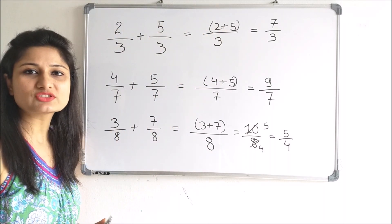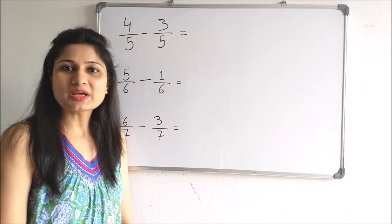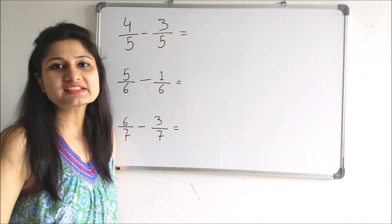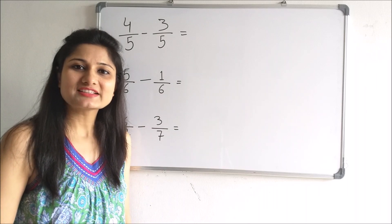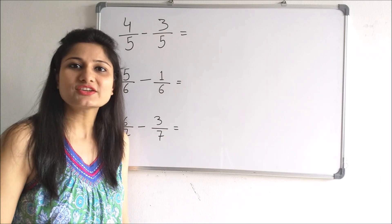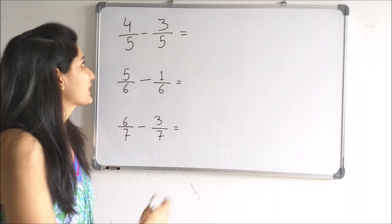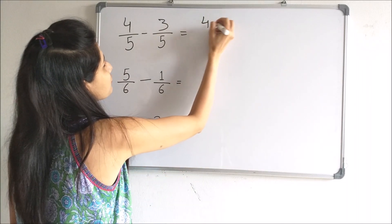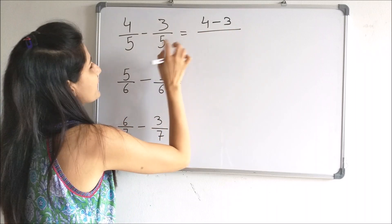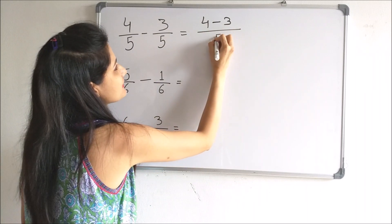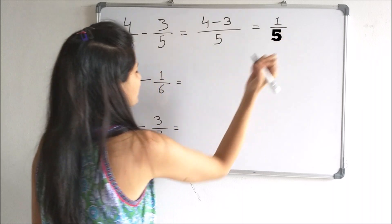Now let us take some examples of subtraction. We have to subtract these fractions whose denominators are same. The same rule of addition will be applied here, except instead of adding the numerators, we will subtract them. That is, we will subtract 4 and 3 and the denominator will remain the same. This gives us 1 by 3.